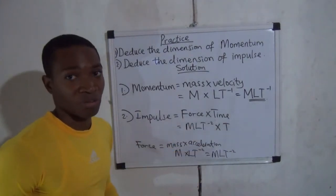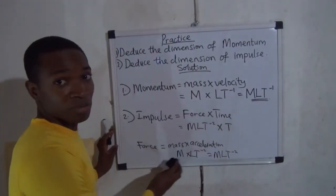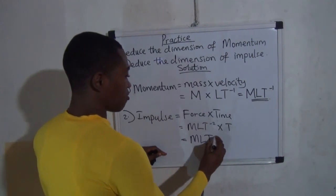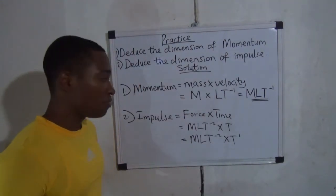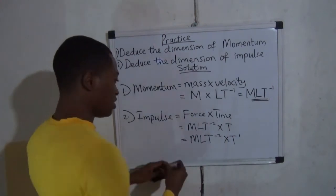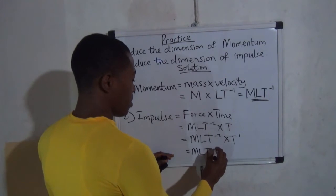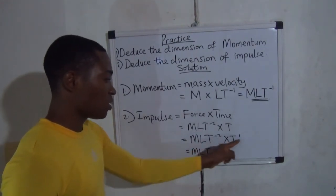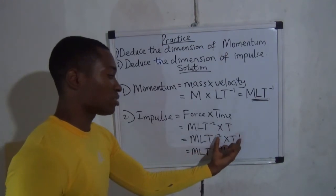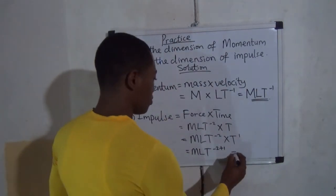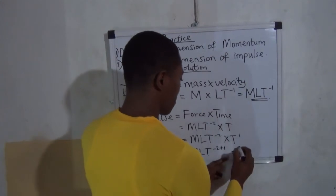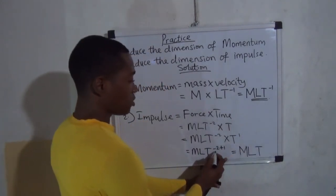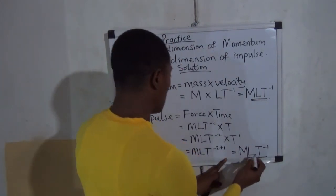You put the dimension of force and multiply by the dimension of time. Combining these two: MLT to the power of minus two, multiplied by T to the power of one. Using the law of indices — M appears once, L appears once, T appears twice so you add the powers: minus two plus one equals minus one. So the dimension of impulse is MLT to the power of minus one.